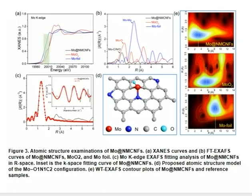This picture shows atomic structure examinations of the Mo catalyst. Panel A is the X-ray absorption near-edge structure (XANES) curves and panel B is the extended X-ray absorption fine structure (EXAFS) curves of the Mo catalyst. Panel C is the Mo K-edge EXAFS fitting analysis in R-space, with the inset showing the K-space fitting curve of the Mo catalyst.